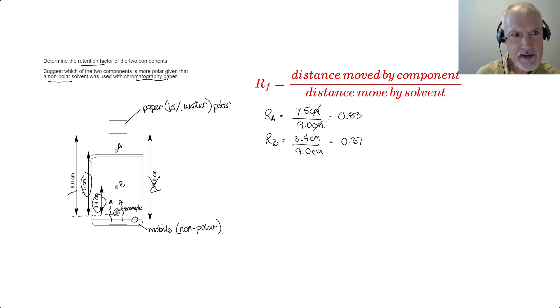In the last part of this question, we're asked which of these two components, A or B, is more polar? Well, substance B is attracted to my stationary phase. It didn't move very far. So substance B was attracted to the paper. And the paper, we know, is very polar. That would then suggest the attraction is due to the fact that B must also be a very polar molecule.